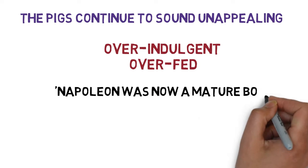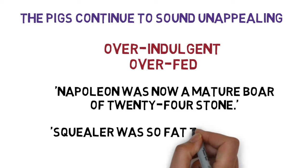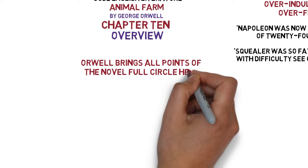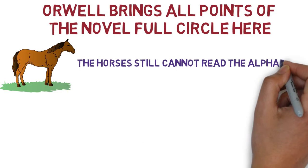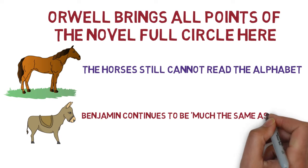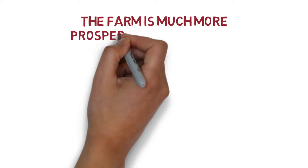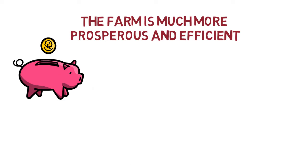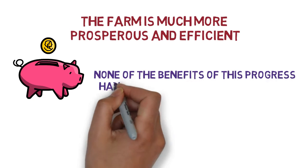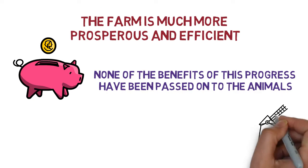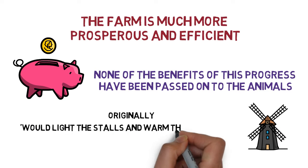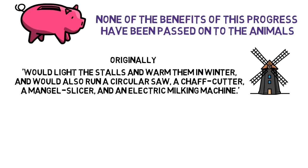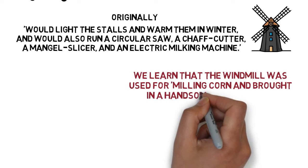Napoleon was now a mature boar of 24 stone, and Squealer was so fat that he could, with difficulty, see out of his eyes. Orwell brings all points from the early part of the novel full circle here. The horses, old and new, still cannot read the alphabet, and Benjamin continues to be much the same as ever. We learn too that the farm is much more prosperous and efficient — they have a threshing machine and a hay elevator — but none of the benefits of this progress have been passed on to the animals. The windmill, originally built to light the stalls and warm them in winter, and also to run a circular saw, a chaff cutter, a mangle slicer, and an electric milking machine, is now just used for milling corn and brings in a handsome money profit.